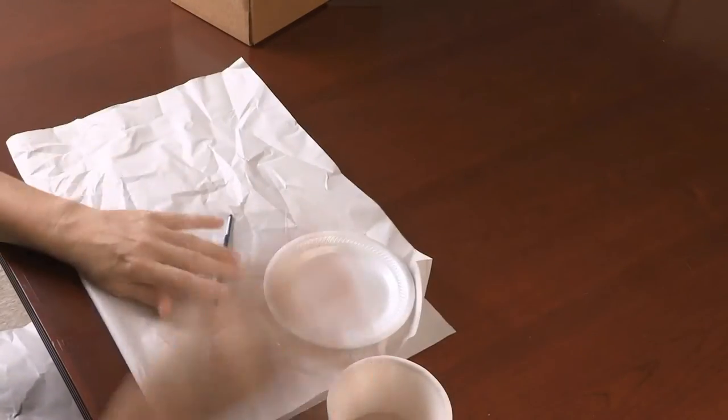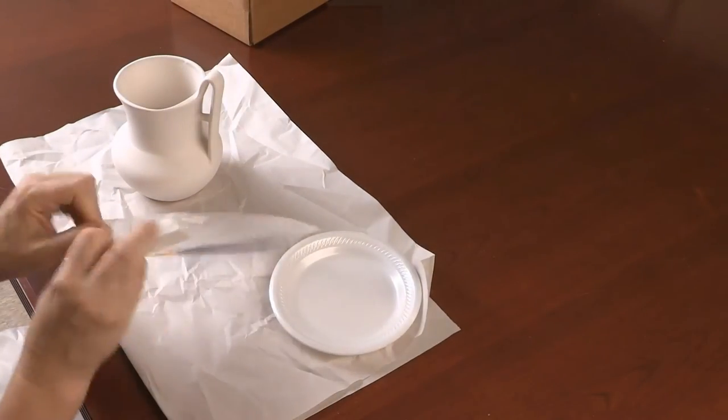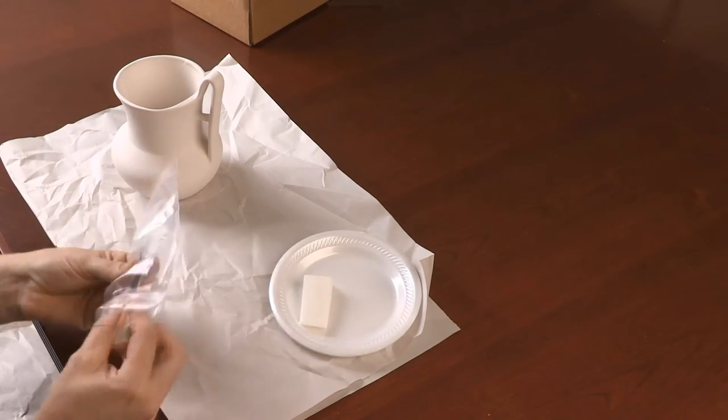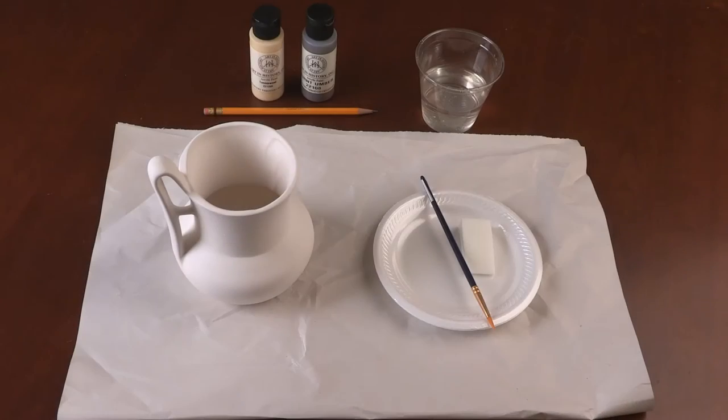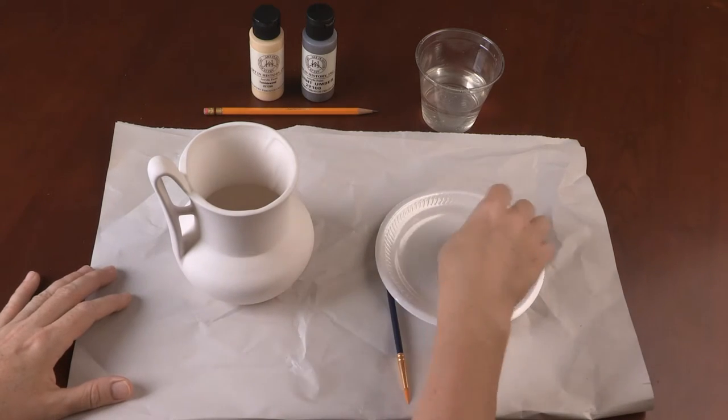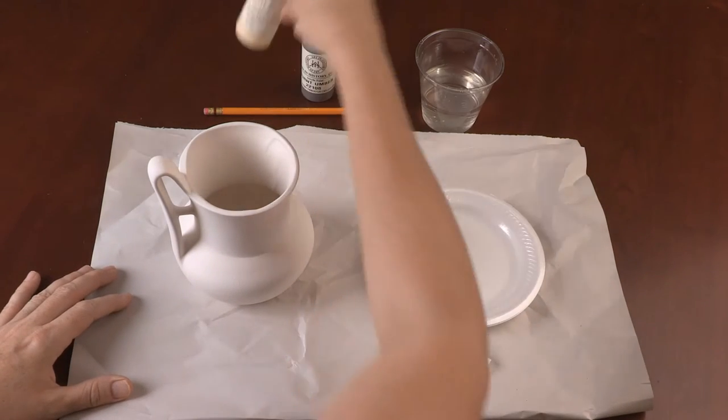Fold the second sheet of craft paper and place the replica on top. Lay the two plates, paintbrush, and white sponge on the paper. You will use the yellow paint first. Squeeze some yellow paint onto one side of the empty plate.